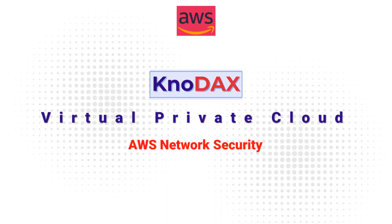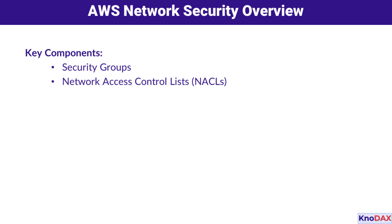Welcome. Let's dive into the fundamentals of AWS network security. At the core of AWS network security are two key components: security groups and network access control lists. Together, these two help secure your cloud environment. In this video, we will break these down step by step so you can better understand how they work and how to use them.